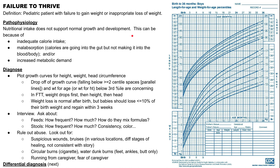The first category is inadequate calorie intake. The second is malabsorption, where the calories are going into the gut lumen but not necessarily making it into the blood, into the actual body. The third is increased metabolic demand — the baby is getting and absorbing the calories, but the baby's body requires more calories than other babies, or the baby's body is malfunctioning and not using those resources properly.